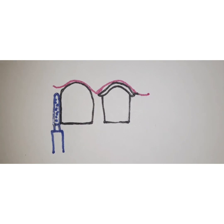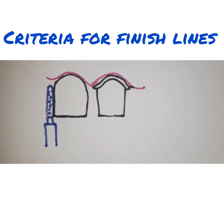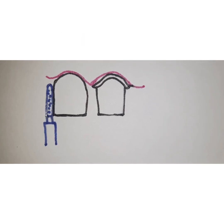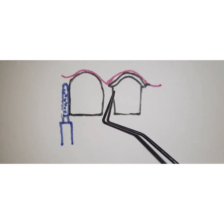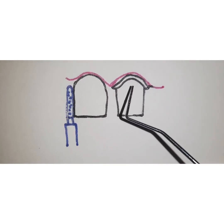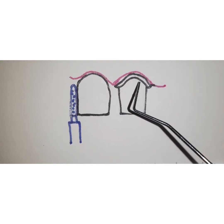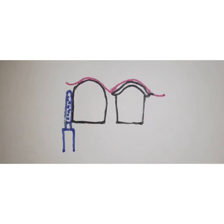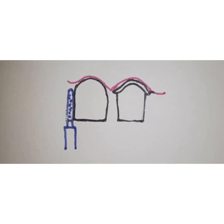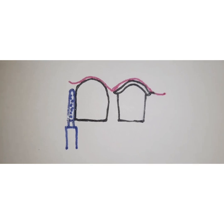Now let us look at what are the criteria for successful finish lines. An ideal finish line should have acceptable marginal adaptation, because at the finish line there should be a good marginal adaptation between the restorative material and the tooth. Poor marginal adaptation will invite plaque accumulation, which can cause secondary caries and failure of the restoration.